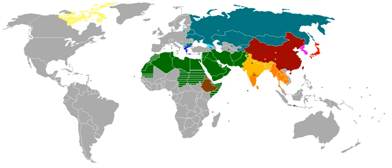Syllabaries are best suited to languages with relatively simple syllable structure, such as Japanese. The English language, on the other hand, allows complex syllable structures, with a relatively large inventory of vowels and complex consonant clusters, making it cumbersome to write English words with a syllabary. To write English using a syllabary, every possible syllable would have to have a separate symbol, and whereas the number of possible syllables in Japanese is around 100, in English there are approximately 15,000 to 16,000. However, syllabaries with much larger inventories do exist. The Yi script, for example, contains 756 different symbols — or 1,164 if symbols with a particular tone diacritic are counted as separate syllables, as in Unicode.